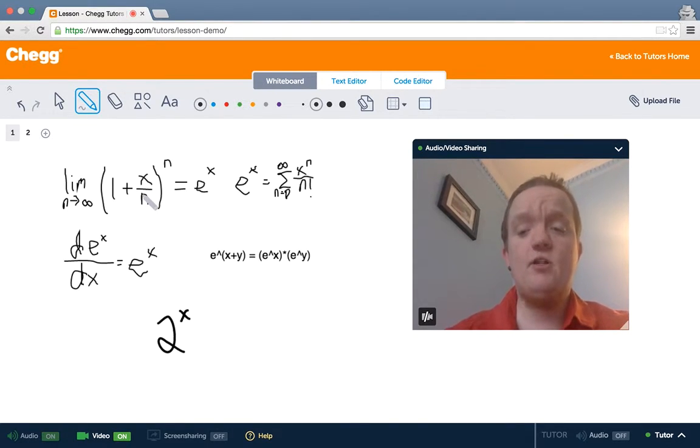e to the x is also the unique function that is its own derivative. In other words, if you take the derivative of e to the x dx, you get back e to the x.